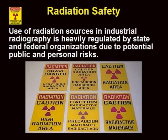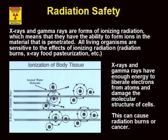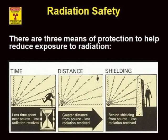The penetrating radiation used for radiographic inspection is very hazardous to the health of people, and thus the use of radiation is heavily regulated. The average person is exposed to roughly 200 mR per year total from both natural and man-made sources. The radiation used for radiography is capable of ionizing or liberating electrons from the atoms of the material through which they pass. This ionizing radiation can damage the molecular structure of cells, which can cause radiation burns or cancer. Those who work with ionizing radiation wear monitoring devices to measure the amount of exposure. The three means to reduce exposure are to reduce the amount of time near the source, increase the distance from the source, and to use shielding to reduce the radiation.